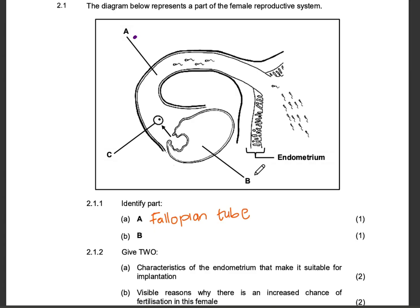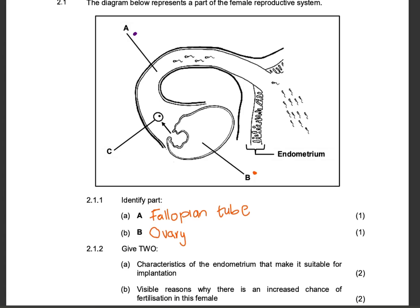Then part B. This whole part over here is obviously the ovary. These one-mark questions, you cannot be getting them wrong. It should really be easy for you at this stage to identify the different parts of any structure that you are given.